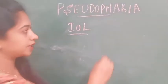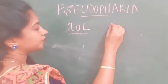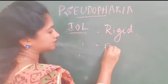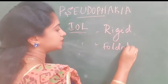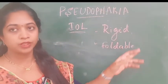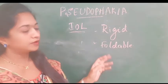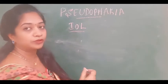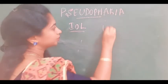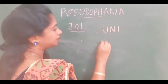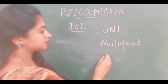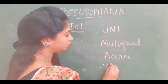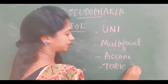Depending upon the rigidity, it can be classified into rigid intraocular lenses and foldable intraocular lenses. These rigid intraocular lenses are usually placed following small incision cataract surgery, whereas foldable intraocular lenses are used following phacoemulsification. And depending upon the focality, it can be classified as unifocal lenses and multifocal lenses, as well as accommodative IOLs and toric IOLs, which are used to correct astigmatism.